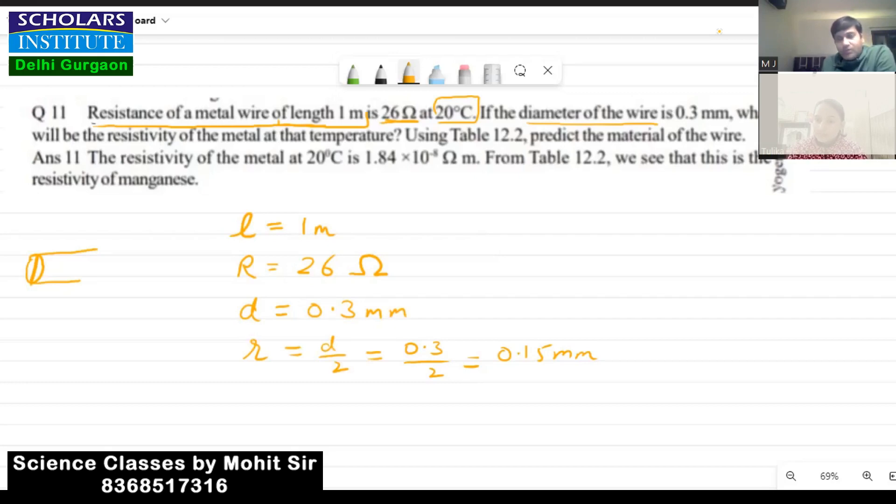To convert into meters we divide it by thousand, so r will be equal to 0.15 into 10 to the power minus 3. Divided by thousand is 10 to the power minus 3, understood how it came. Or it can also be written in scientific notation as 1.5 into 10 to the power minus 4 meters, okay.